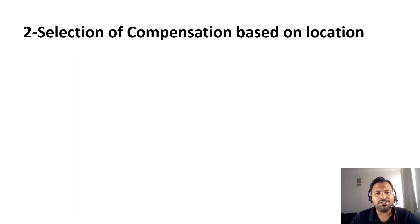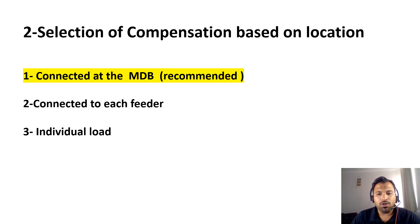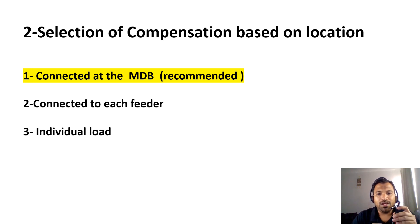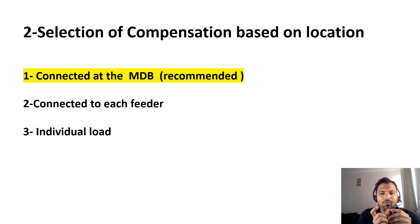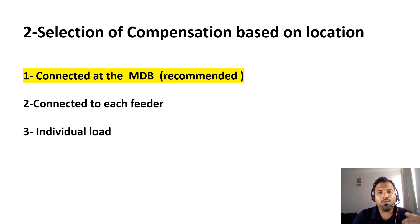Step 2 is compensation based on location — where we want to place the capacitor banks. There are three options: connect it at the main DB side, connect it to each feeder, or connect it to individual loads. When studying theory, we learn that capacitor banks should be placed near the equipment — for example, fans have built-in capacitors, and motors have capacitor banks installed with them to compensate the inductive load.